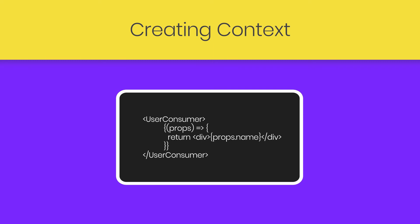I'm going to use this User component inside the render method and access all the stored values using properties. If this doesn't make sense, don't worry — I will create a simple example in the next lecture and explain each and every step of creating context in your React application. Next, we're going to see how to use Context API in a React application.